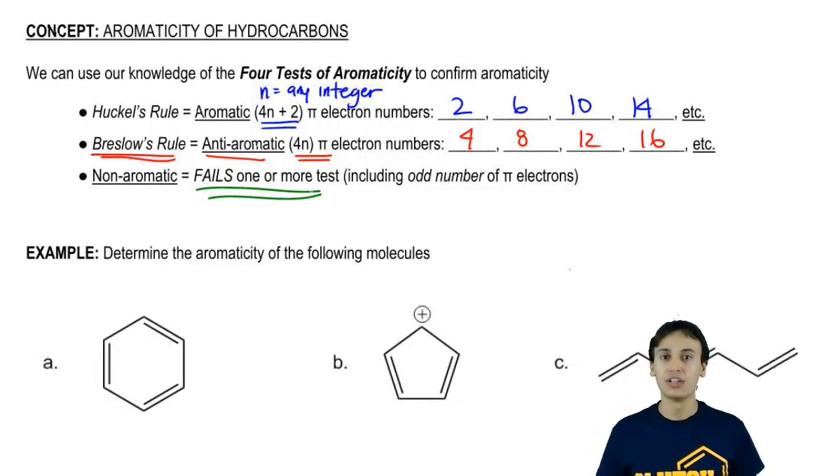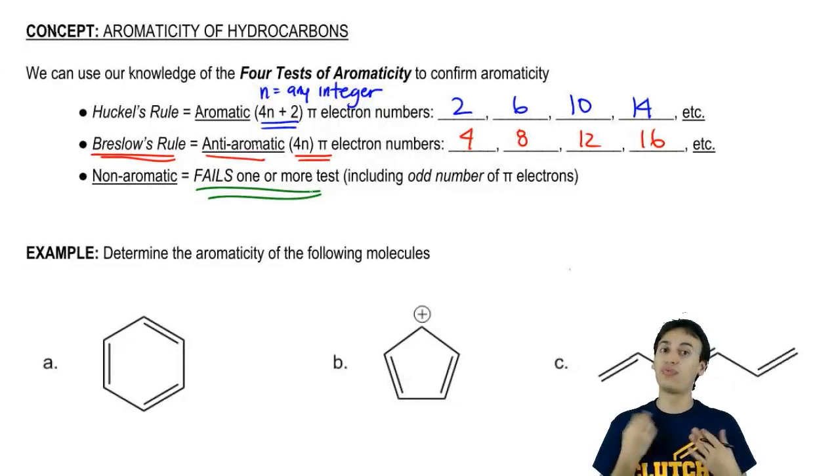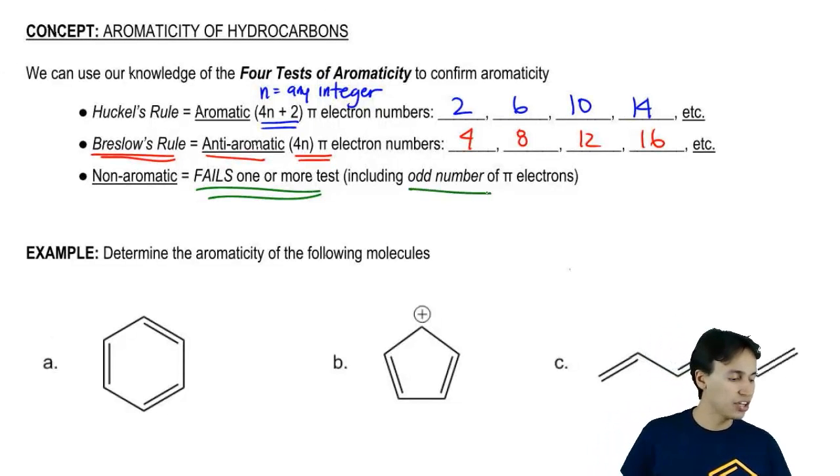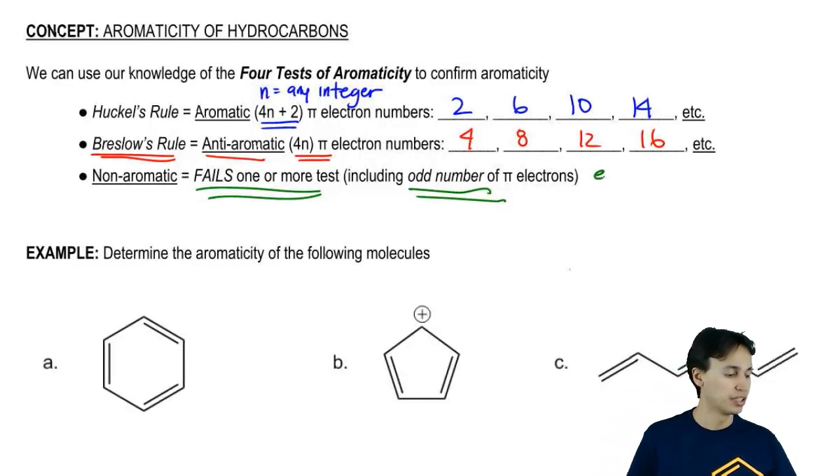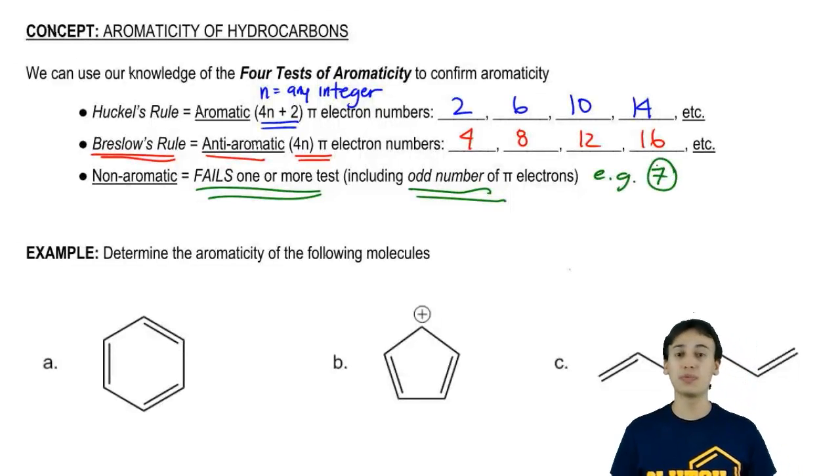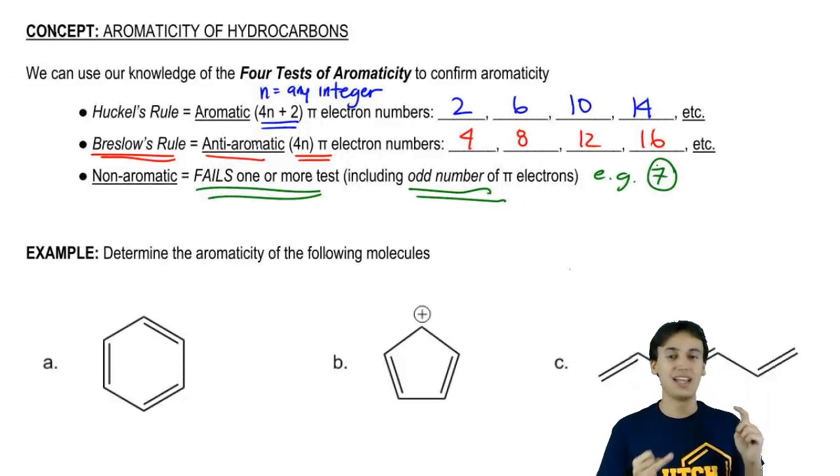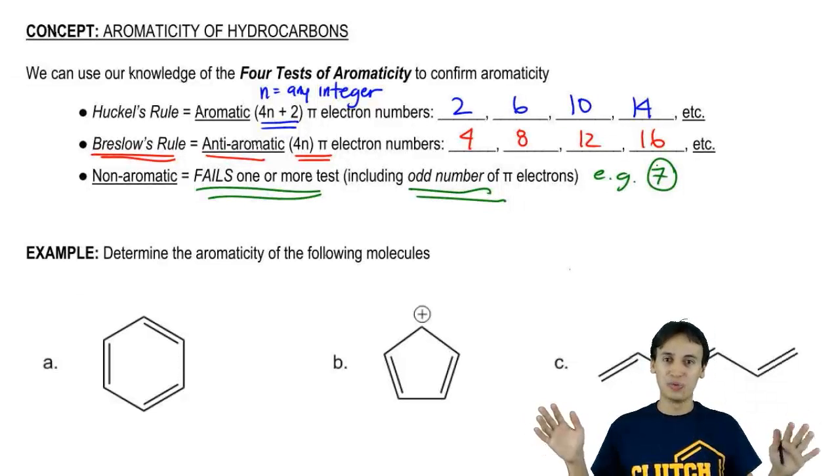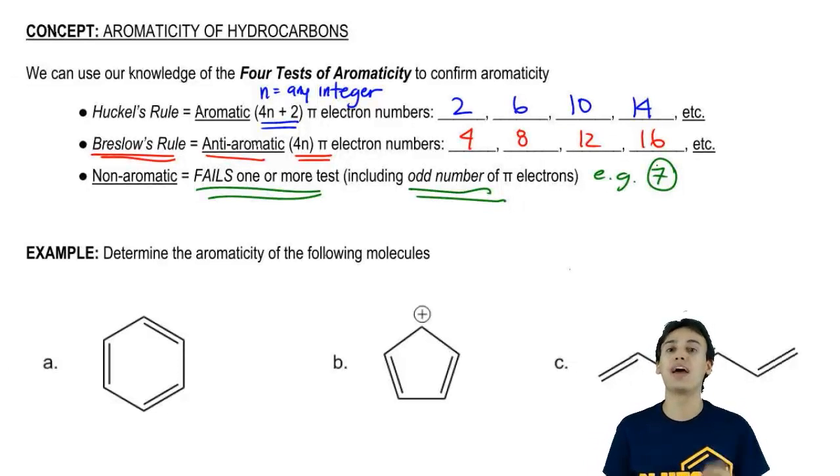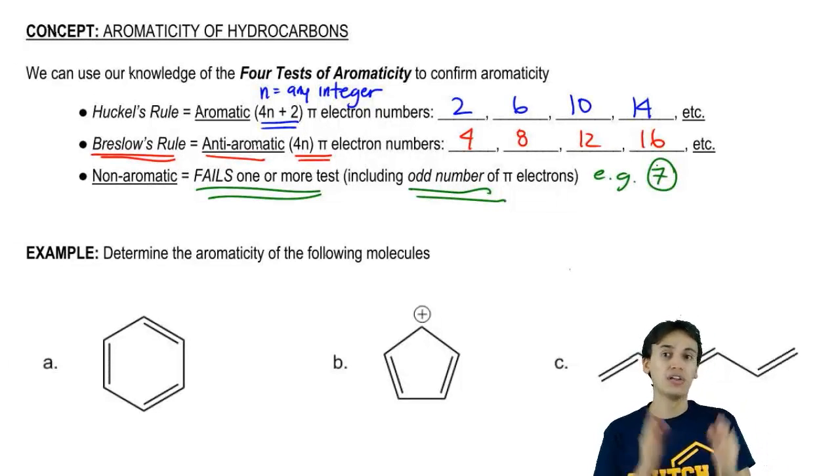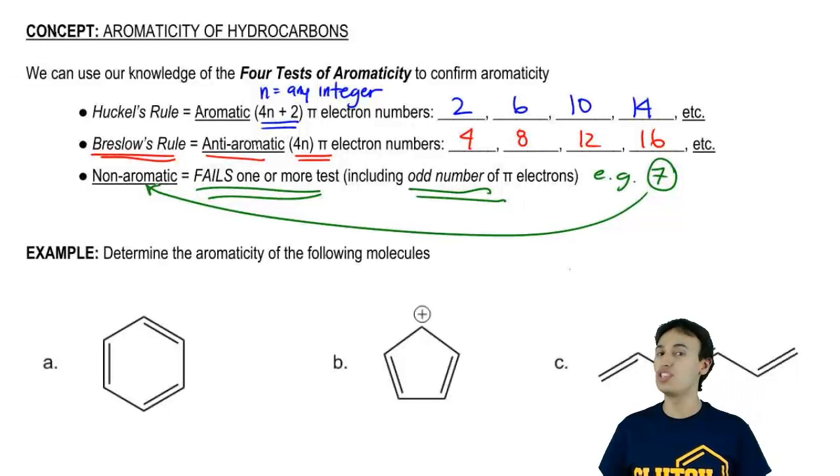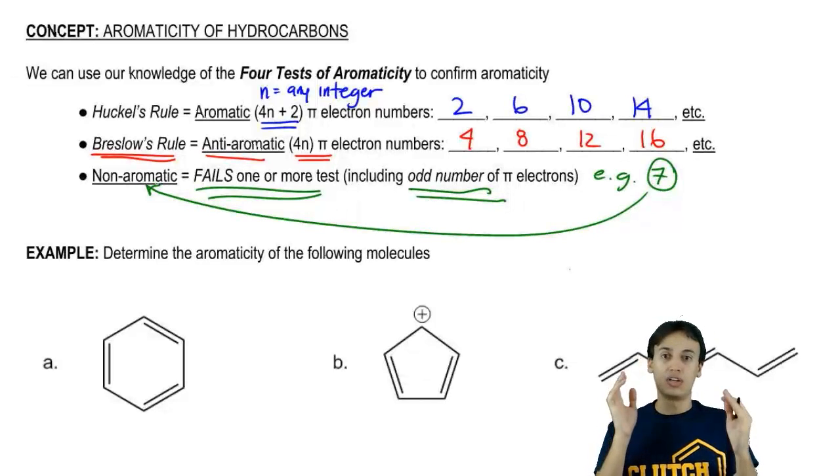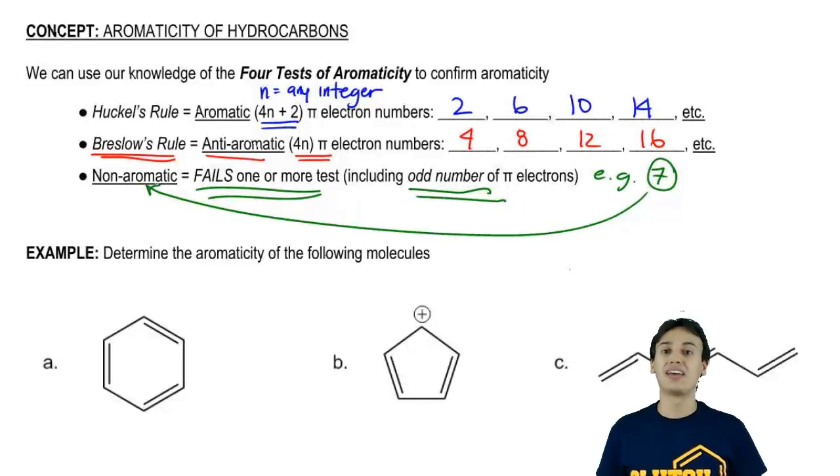One thing I want to point out is that some pi electrons can actually count towards failing the rule. If you have an odd number of pi electrons, so that would literally be any odd number. For example, the number 7. The number 7 doesn't fall into any of these types of electrons. It's not 4n plus 2. It's not 4n. It's simply left out. We never discussed it. If you have an odd number of pi electrons, you're also said to fail Huckel's rule. That means that you would be automatically non-aromatic. Just keep that in mind that you can even fail the test of aromaticity by the number of pi electrons that you have.